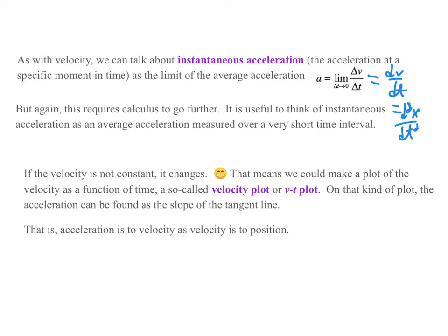If the velocity is not constant, it changes. That means we could make a plot of the velocity as a function of time, a so-called velocity plot, or a v-t plot. In that kind of plot, the acceleration will be found as the slope of the tangent line. Notice the change here. On a v-t plot, the acceleration is the slope. But on an x-t plot, the slope is the velocity.